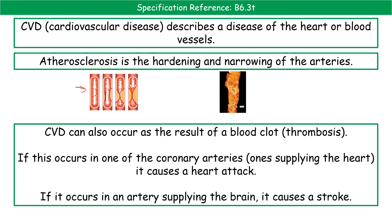Other causes of cardiovascular disease include blood clots, referred to as thrombosis. If a blood clot occurs in one of the coronary arteries — which supply the heart itself with oxygen and glucose — you get a heart attack. If it occurs in the artery supplying your brain, that leads to a stroke. Remember: coronary arteries supply your heart with oxygen and glucose, so a blockage there causes a heart attack.